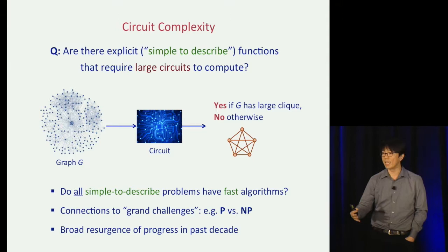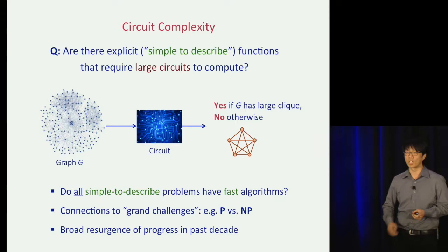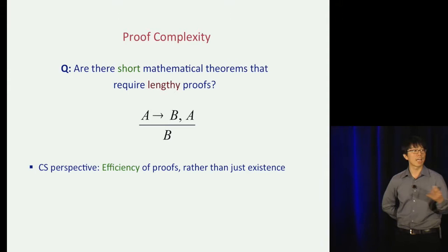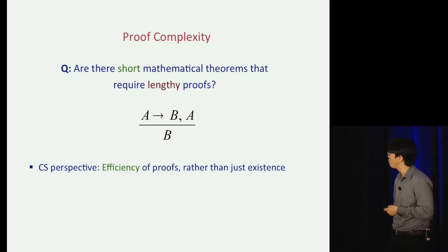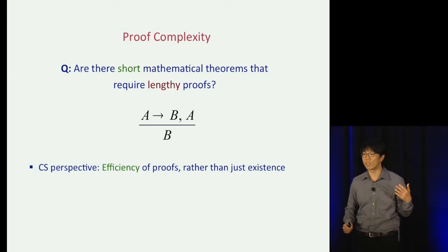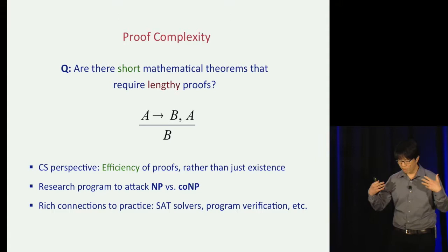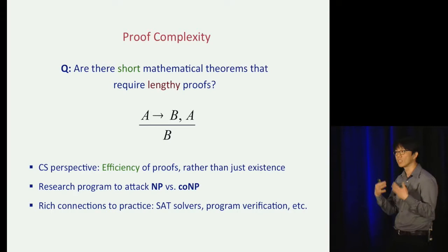The second question comes from proof complexity. The question here is: are there short, simple-to-state mathematical theorems that require very lengthy proofs? Proofs have been studied in mathematics, logic, and philosophy for millennia, but this is a distinctively computational perspective. We care not just about the existence of a proof, but the efficiency of proofs — is there a short proof, and is there an automated way to find it quickly? Proof complexity came about as a research program to attack the NP versus co-NP question, but it's bridged rich connections to practice — SAT solving, program verification, and so on.